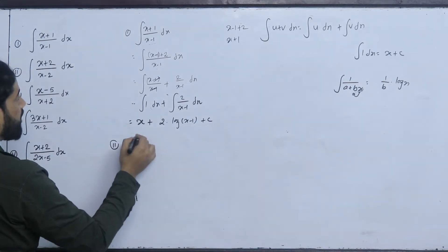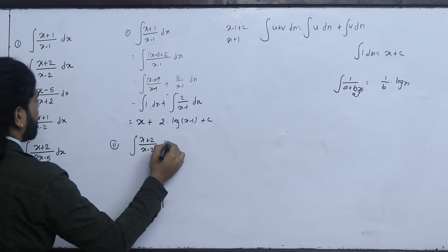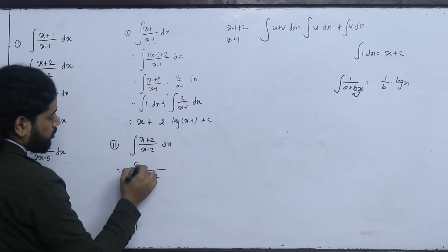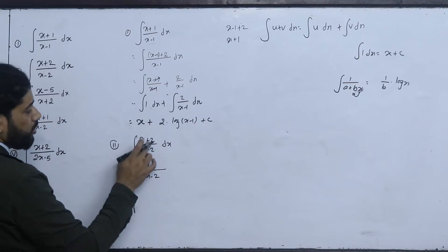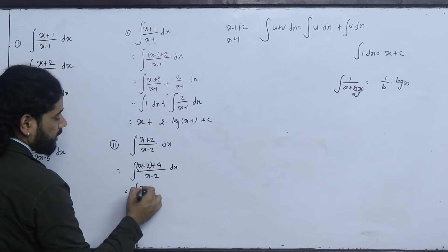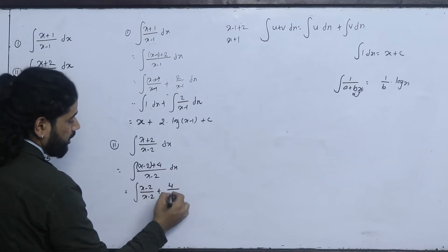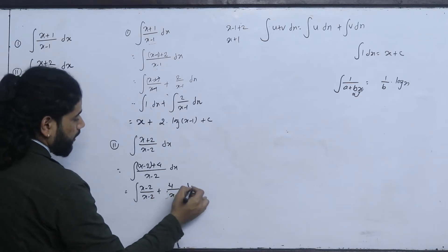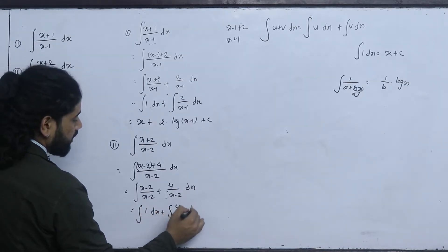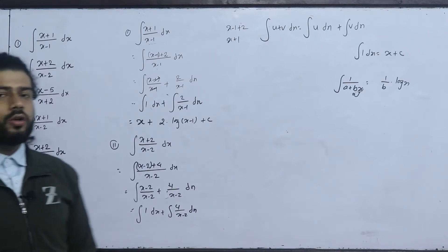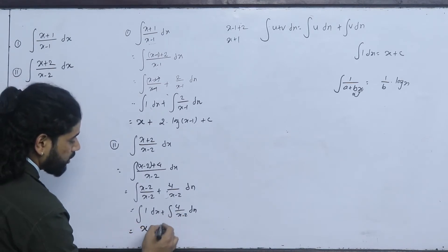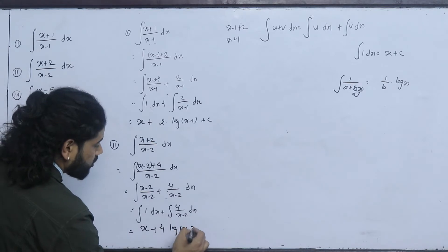Now, Question 2: integral of (x+2)/(x-2) dx. We rewrite x+2 as (x-2) + 4, so the numerator becomes (x-2) + 4. This gives us (x-2)/(x-2) + 4/(x-2), which simplifies to 1 + 4/(x-2). Integrating, the algebraic term gives x and using the log rule on 4/(x-2), we get x + 4 log|x-2| + c, where c is the integrating constant.